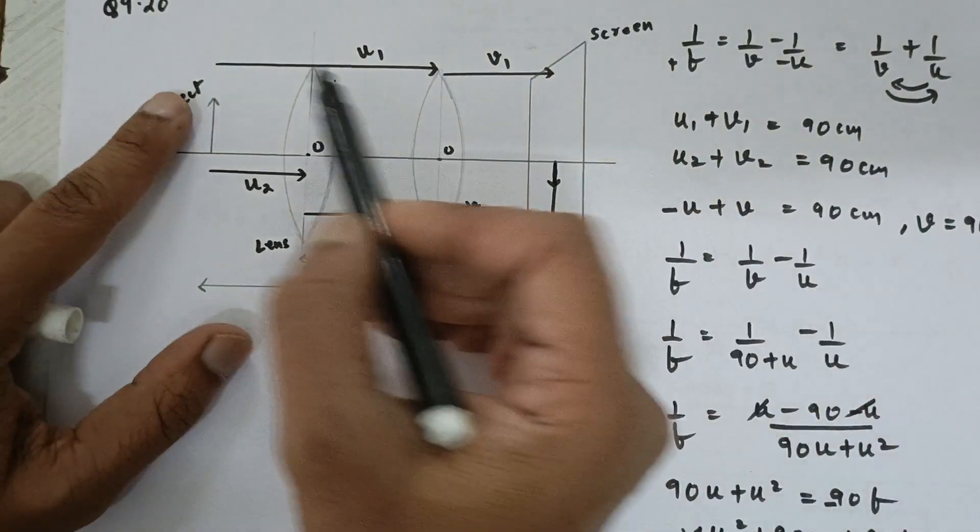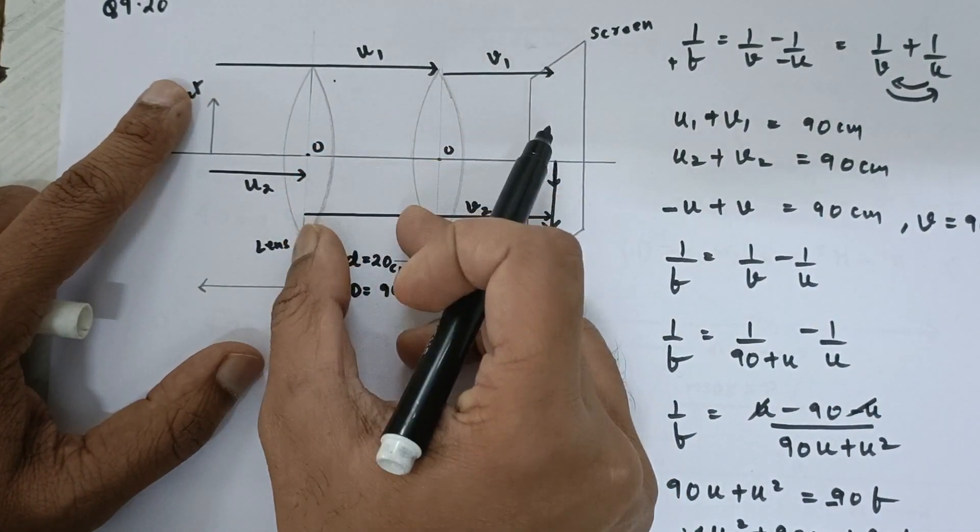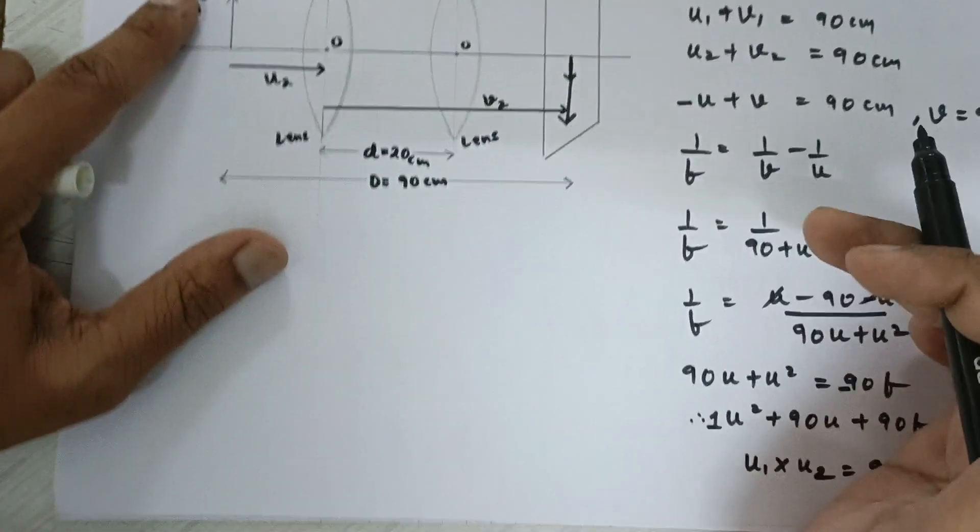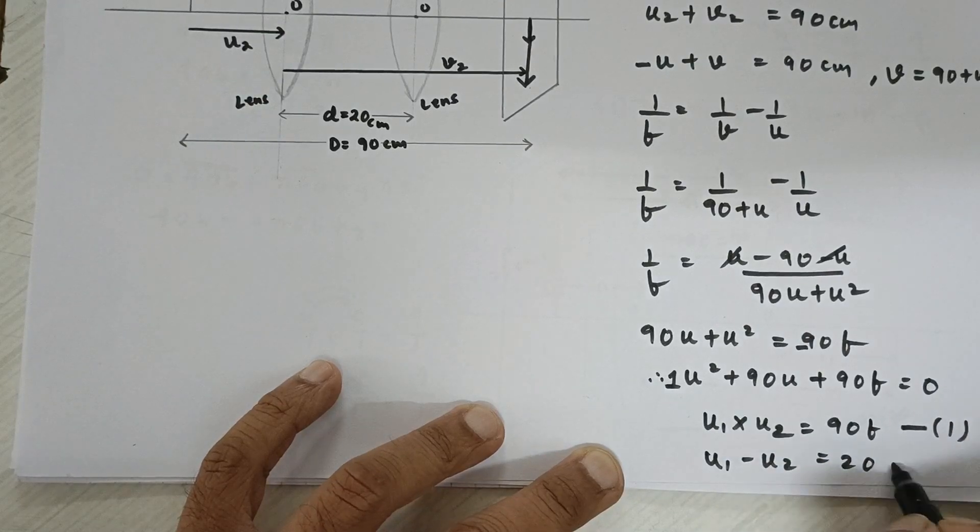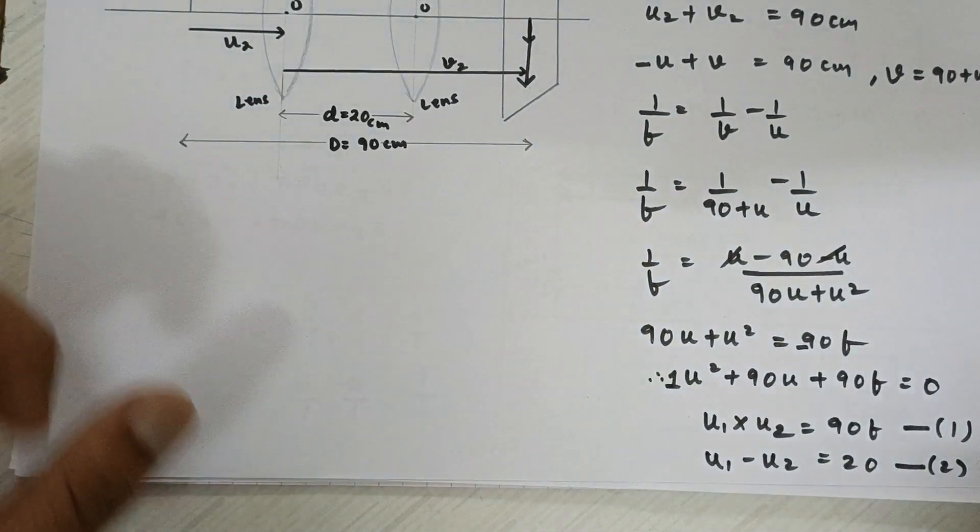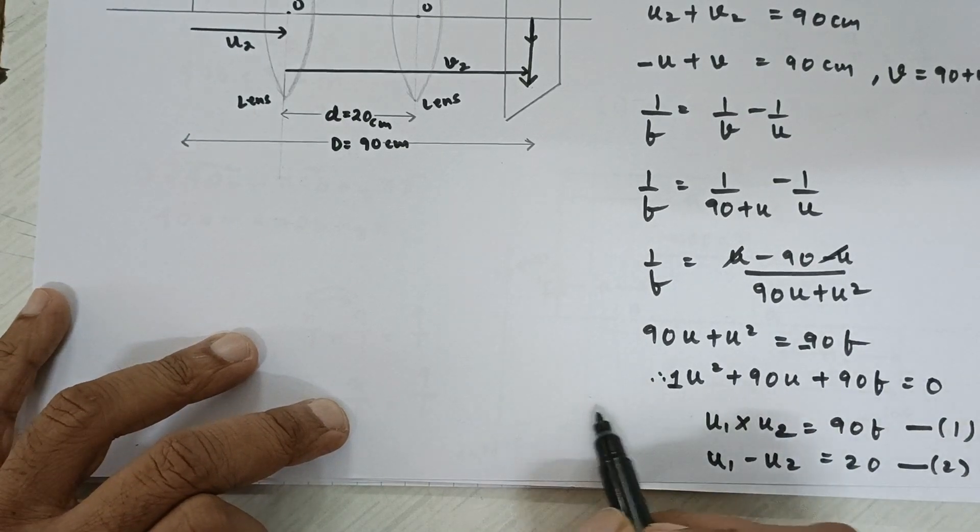The second equation is very clear u1 minus u2 is 20 centimeters. This is my second equation. And the third equation is the sum of the roots that is u1 plus u2 that should be 90. We know this very well.